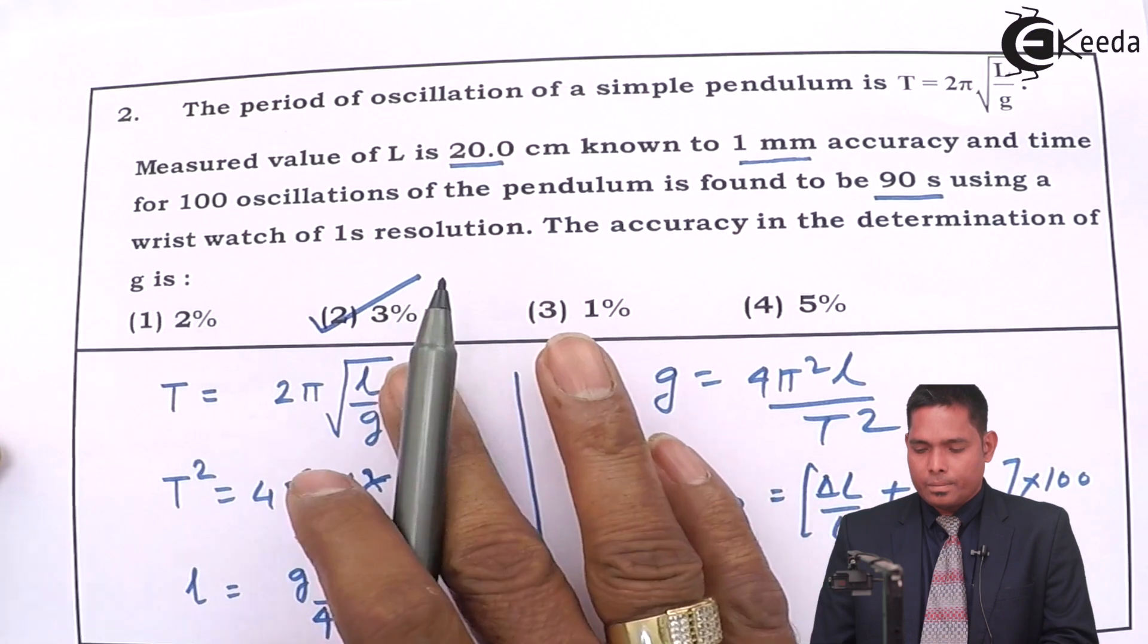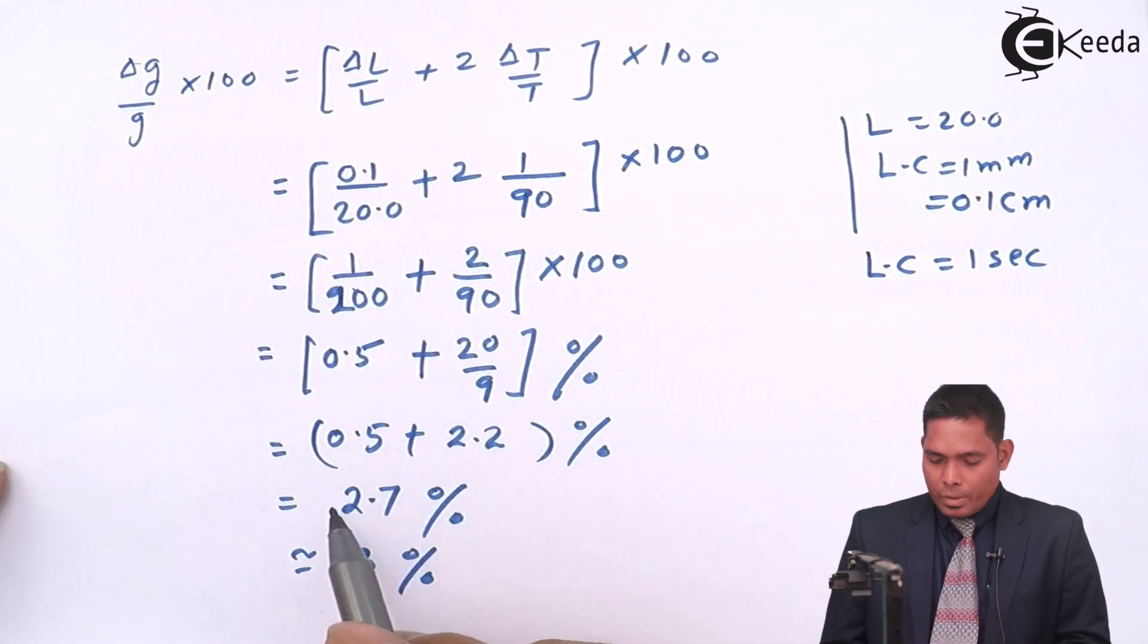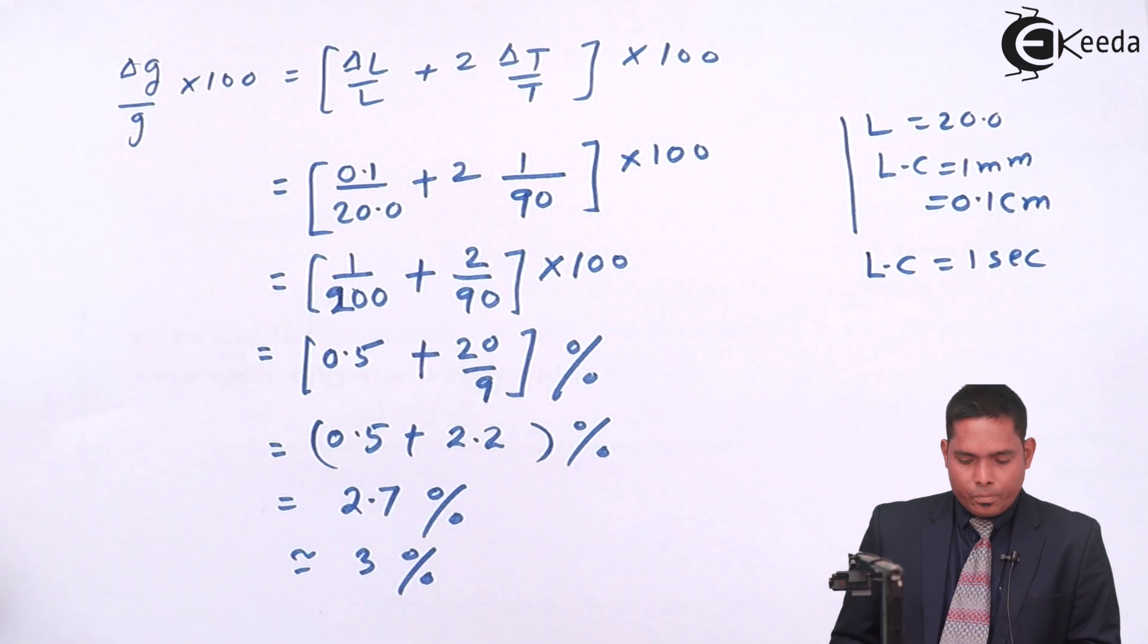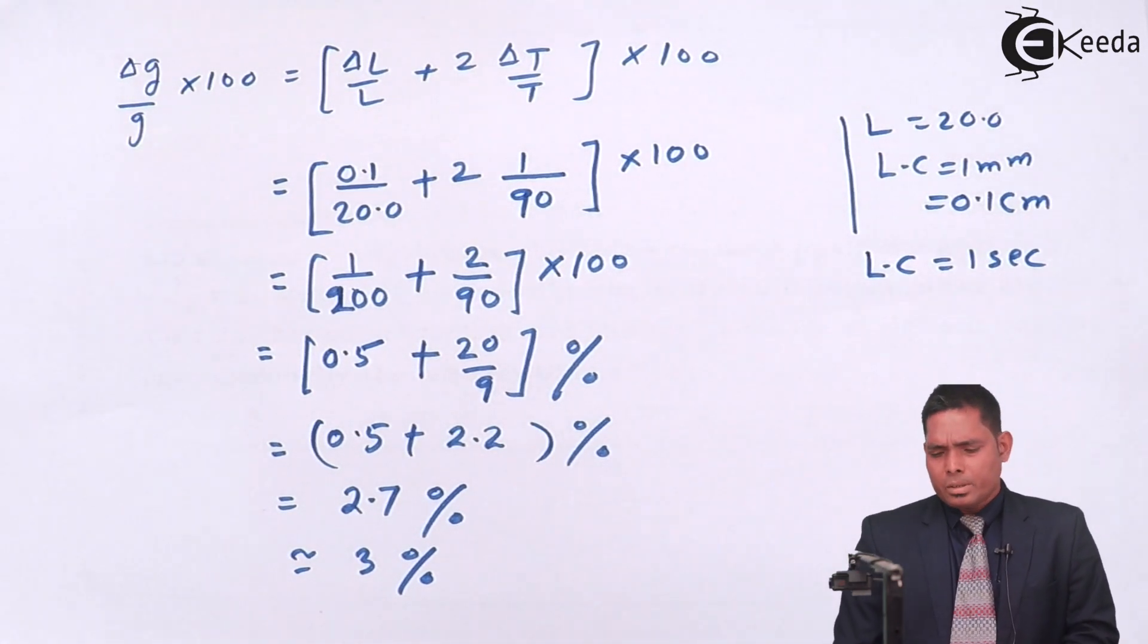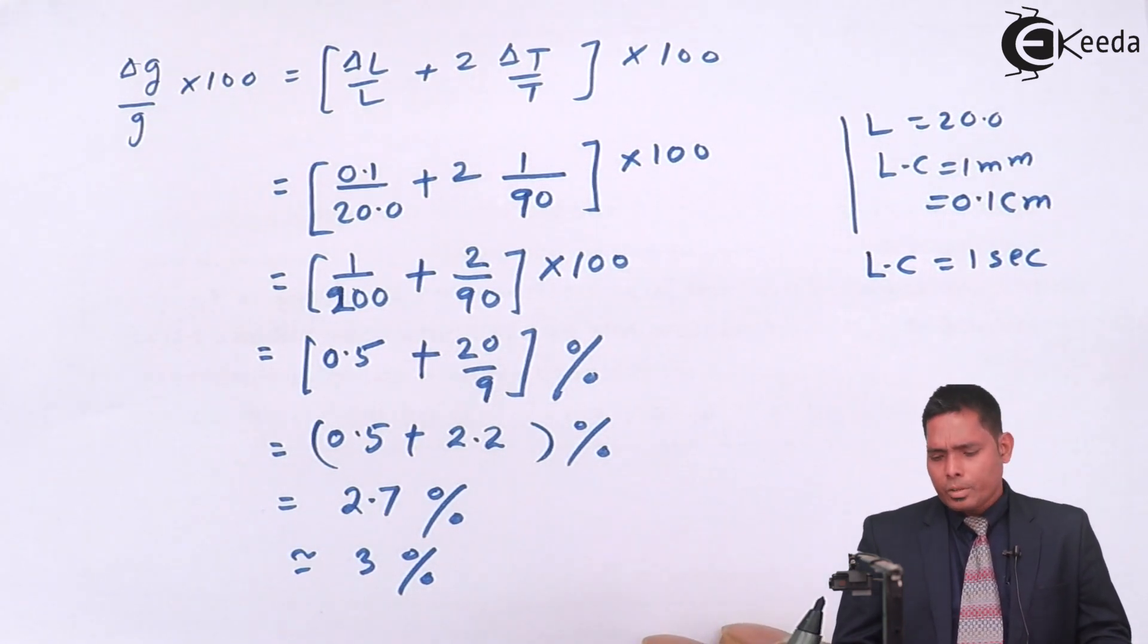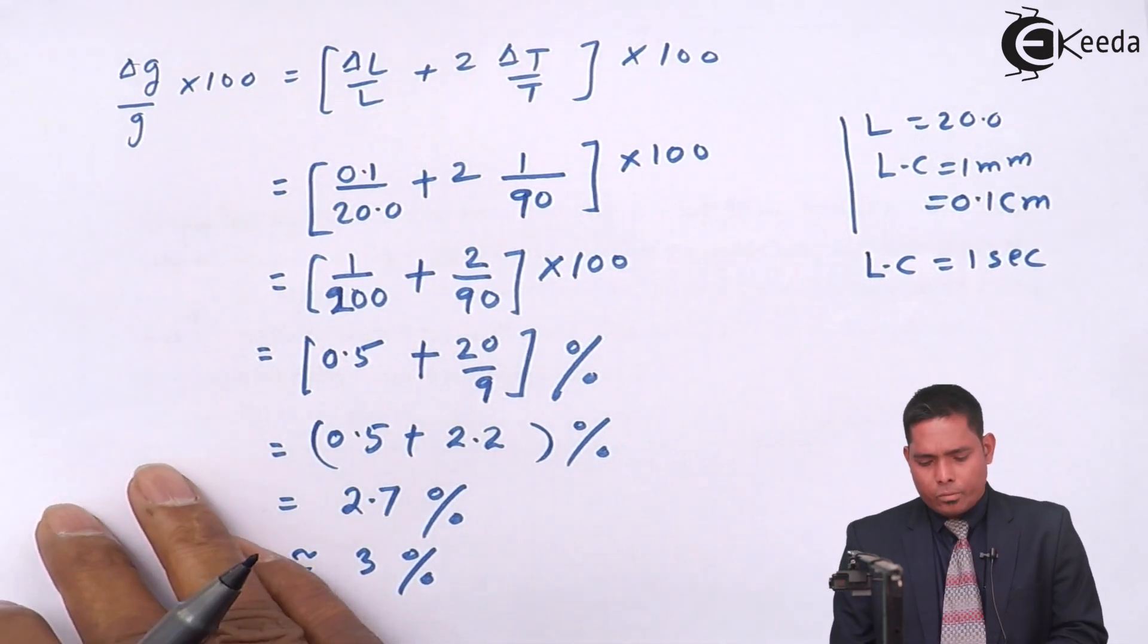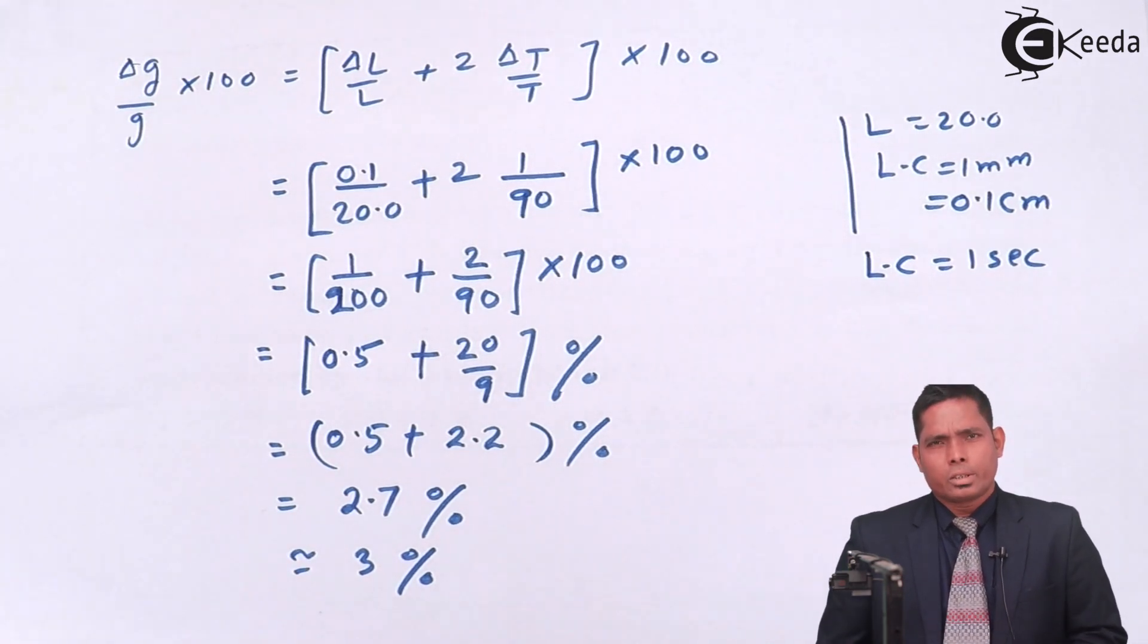Three percent is the correct answer. You can see that we can approximate this to three percent. So the error is—the percentage error is three percent. That means the reading, the measurement, is done in a very accurate manner because error is one to two percent or three percent is okay, we consider that. Thank you, then we'll move to the next question.